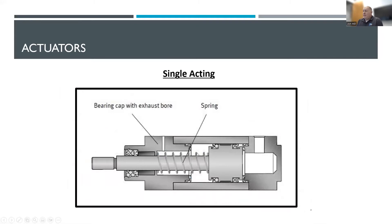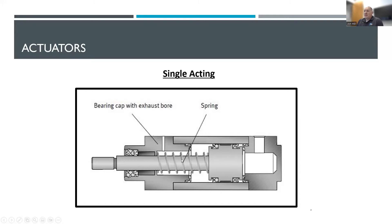With actuators, we have a couple of different types. A single-acting actuator typically has some sort of spring in it. Air comes in at the far end, pushes against the piston, and gives us motion out. When we're done with that motion, we release it to free air pressure and the spring overcomes that pressure and pushes the piston back. The amount of force this can generate is dependent on the area of the piston — the larger the piston, the more area you're acting on, which gives you more force.